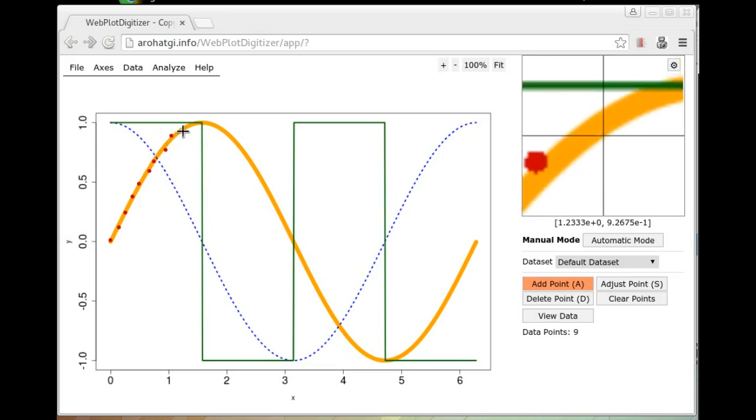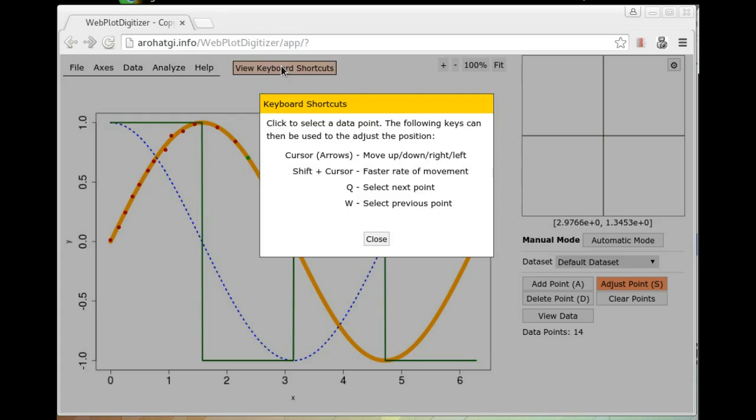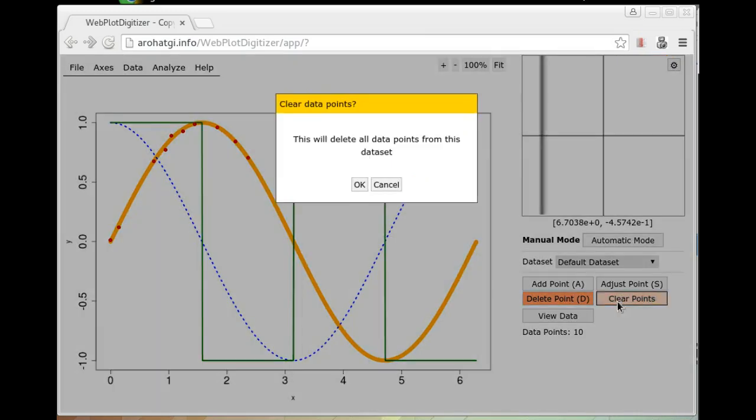So in this case, if you're interested in the orange curve, just go click along the curve itself. You can also adjust the position of these points after selection by choosing the select points option. And you can use your keyboard cursor keys and adjust the point location. There are also other keyboard shortcuts available to help this process. The points here can also be deleted by clicking on delete points and clicking on the points that you want to remove. You can also remove all the points together by clicking on clear points.